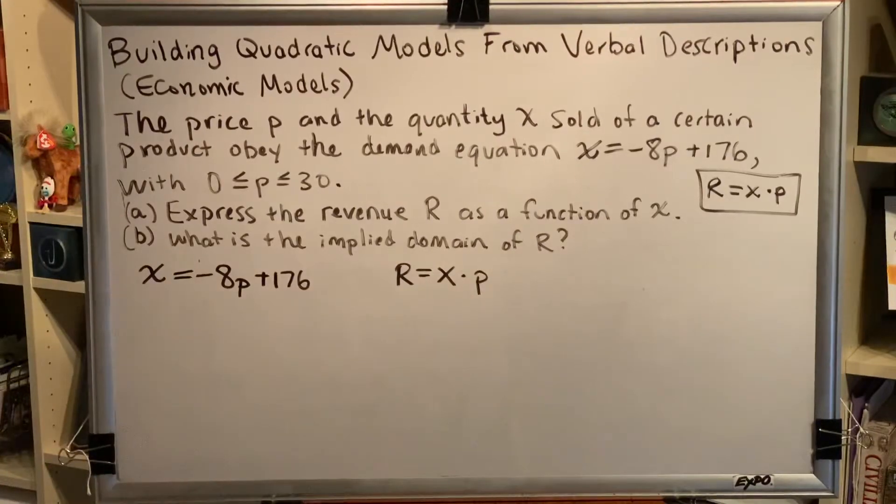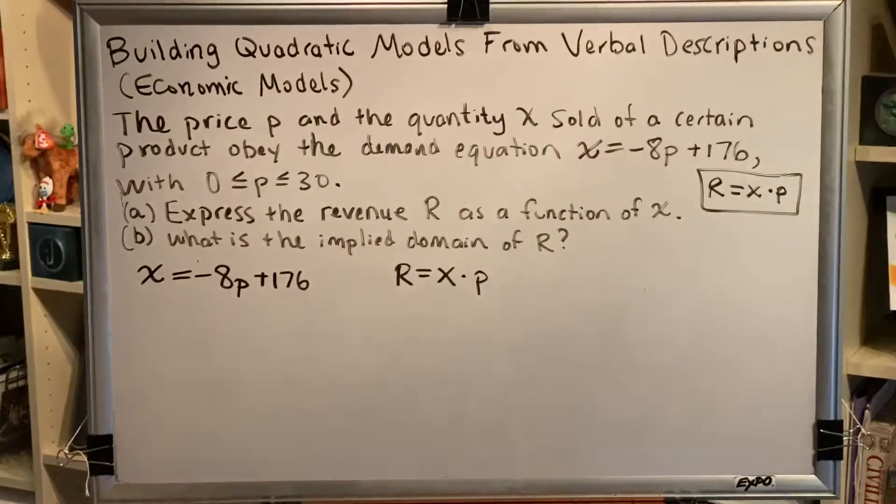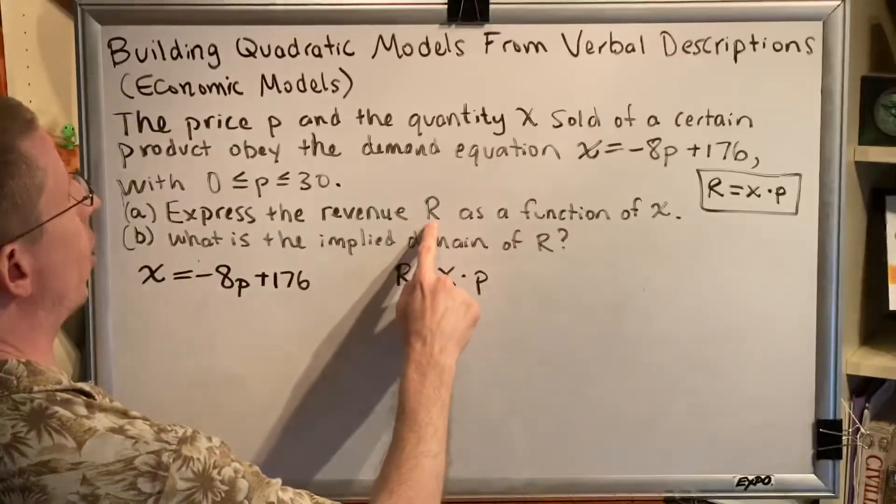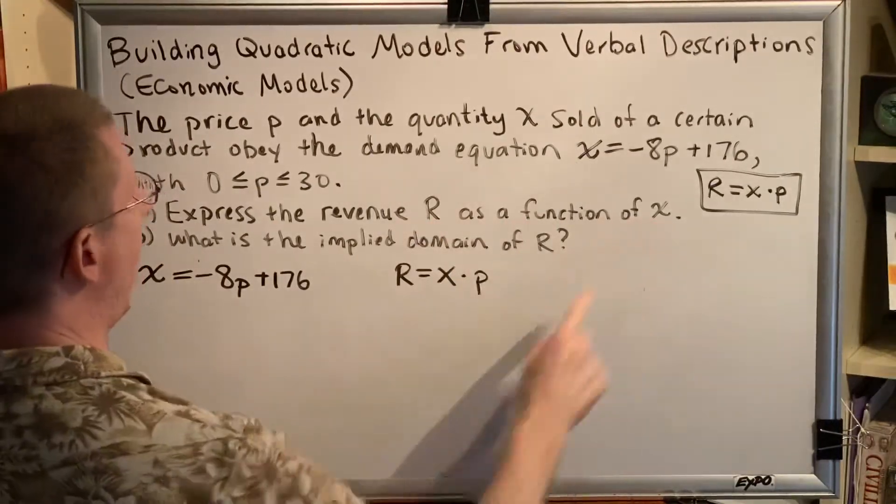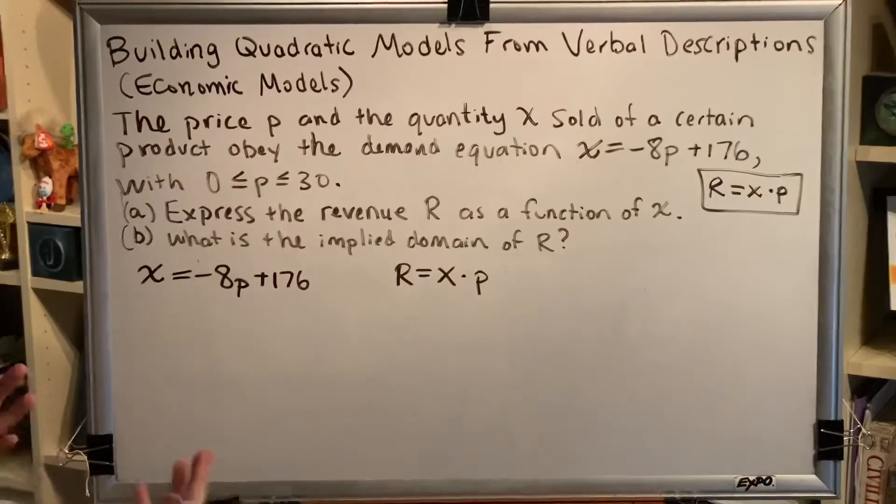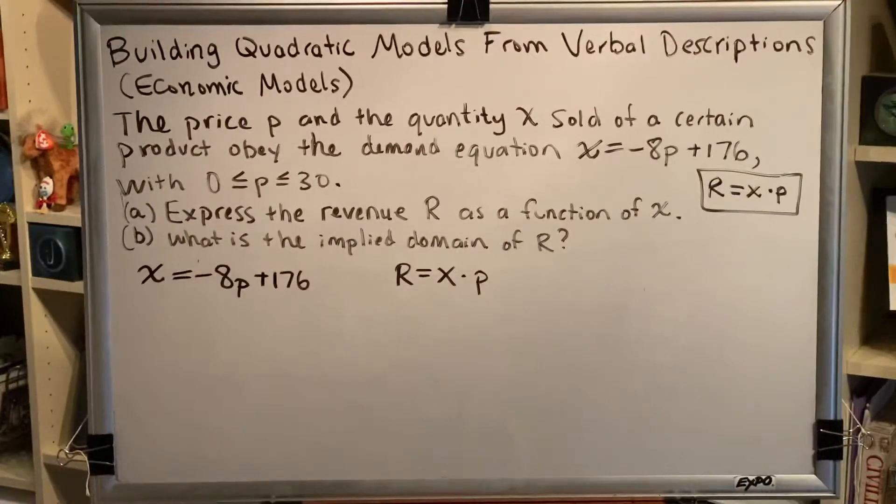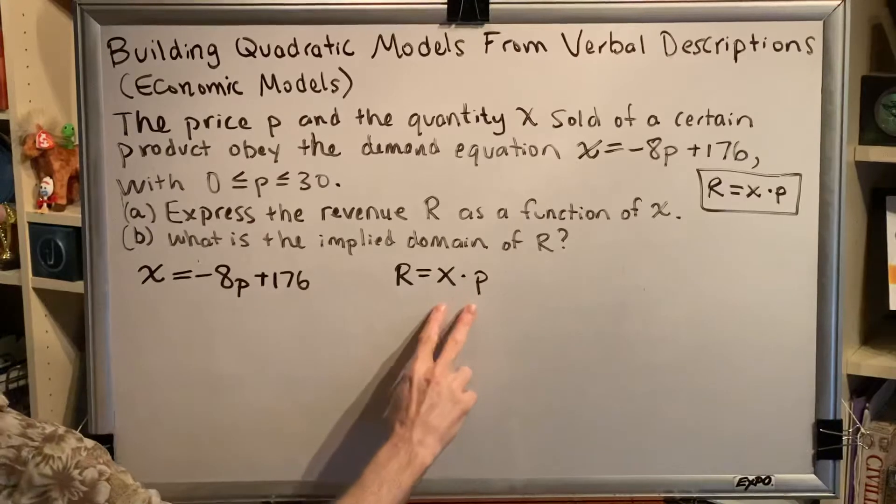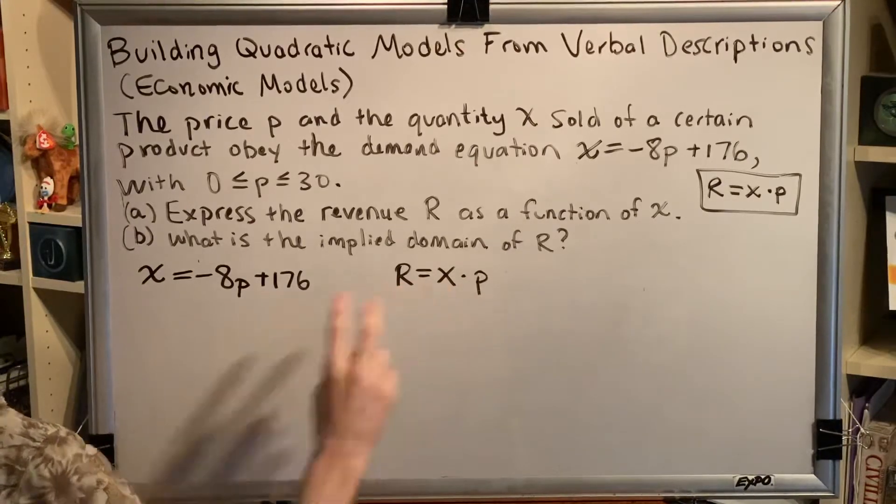Let's look at part a. Part a says to express the revenue R as a function of x. What that means is that we want one equation where the variables in it are R and x. So which one of these equations is the closest? Well, it would have to be this one. This is the only equation that has both variables in it.